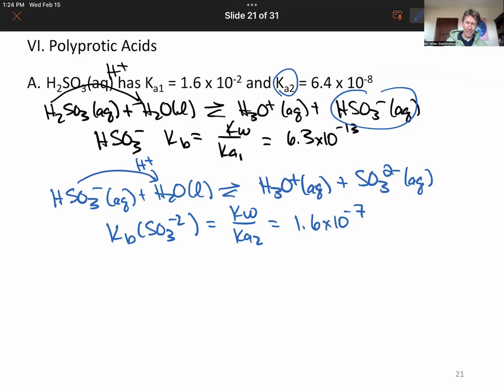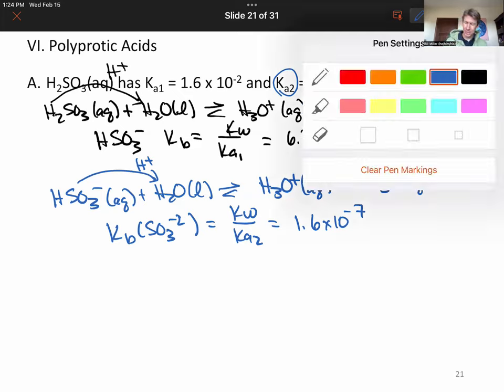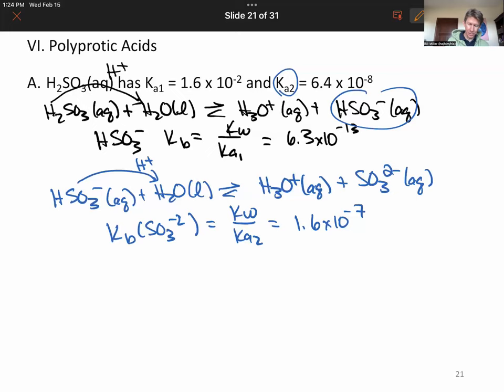Now, what we can say is that as you go from Ka1 to Ka2, you'll notice that H2SO3 is a stronger acid, although it is still weak. It is a stronger acid than HSO3 minus. Coming the other direction, we will note that of these two, sulfite is a stronger base than hydrogen sulfite.